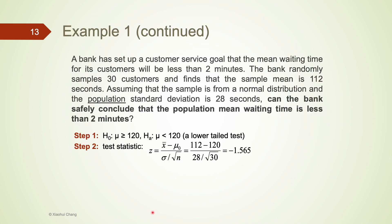Let's go back to example 1. In step 2, we calculate the test statistic using the formula. In the numerator, x-bar is the sample average — in our sample of 30 customers, the sample average is 112, so we plug that in. Next, mu0 is the number from the hypothesis, which is 120. We also have the population standard deviation, which is 28, as given in the question. Divided by the square root of sample size 30. After doing the calculation, we find the z-score is negative 1.565. The negative value indicates that our sample average is less than the null value of 120, which is the number we are comparing with.